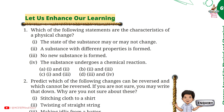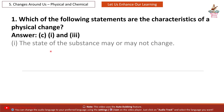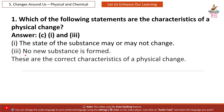Question 1: Which of the following statements are the characteristics of a physical change? Answer: C — 1st and 3rd. 1st: the state of the substance may or may not change. 3rd: no new substance is formed. These are the correct characteristics of a physical change.